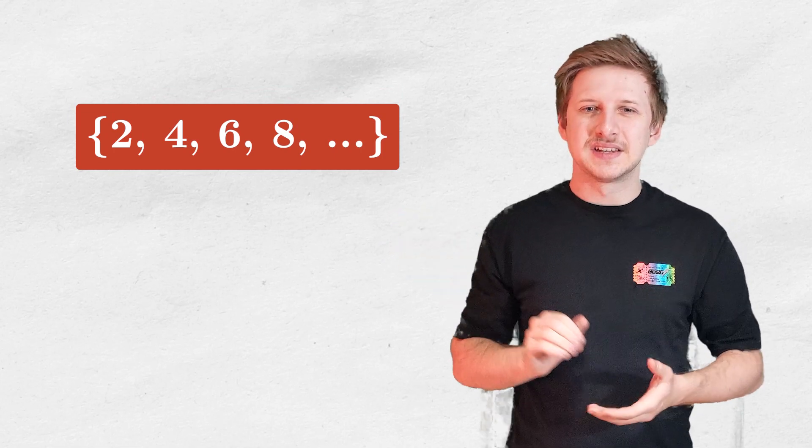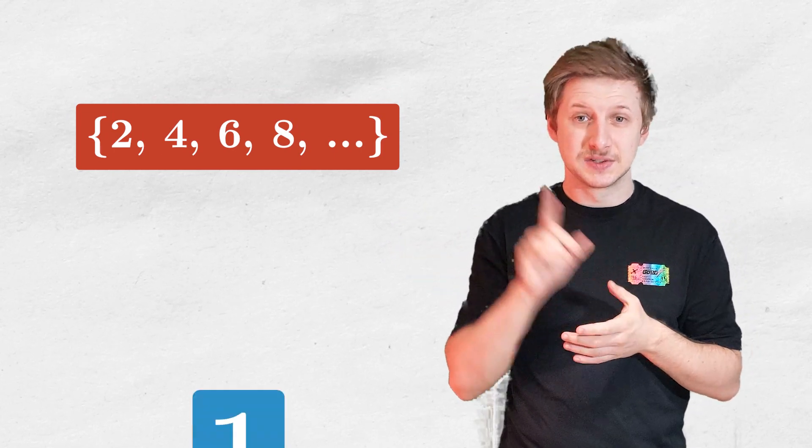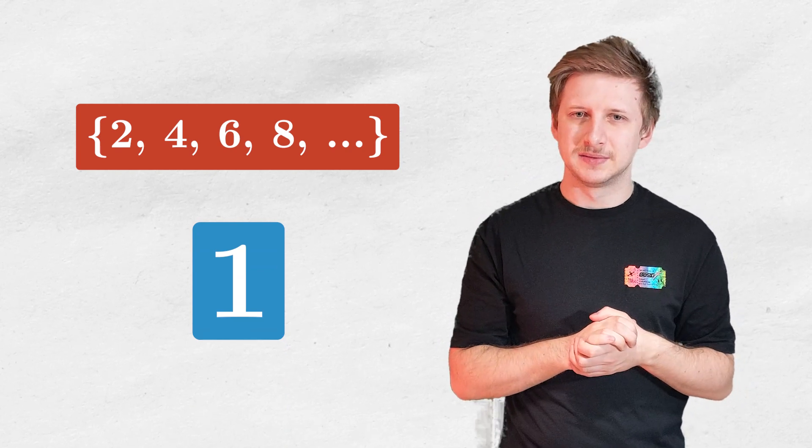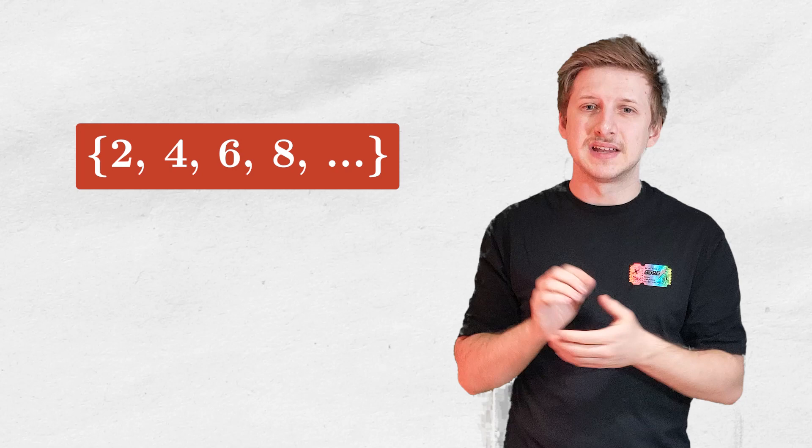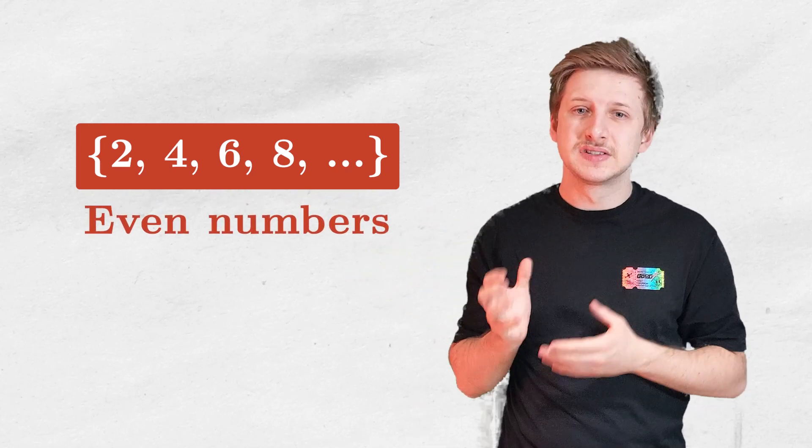This video is sponsored by Brilliant. Hi! This is the set of all natural numbers. Well, not exactly, since 1 is a natural number and is not contained in this set. We'll call this the set of all even numbers, since these are exactly the numbers divisible by 2.